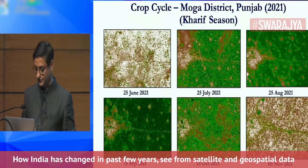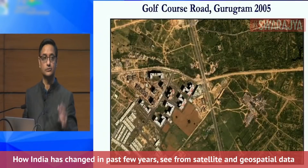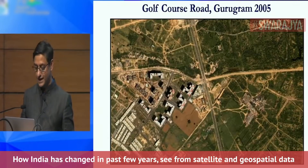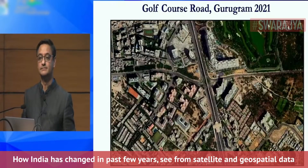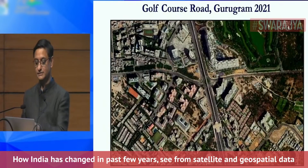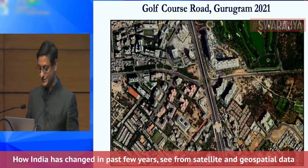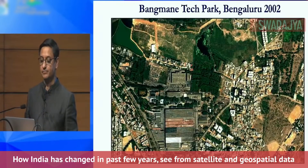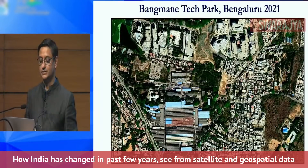To finish, I'll quickly show some examples of urbanization and urban development. This is Golf Course Road in Gurugram in 2005, and this is what it looks like today — you can even see the golf course itself in the top right corner and how the area has developed. Here is a Tech Park in Bengaluru in 2002, and this is what it looks like today.